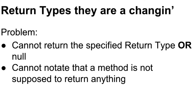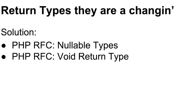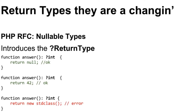So we fixed both of these with two RFCs: PHP RFC nullable types and PHP RFC void return type. At the end of this presentation I will give you the URLs for both of these. They're both out on the wiki — you can take a look at them. I believe they've already both been voted on, passed, and they are in PHP 7.1. So the first thing: RFC nullable types.